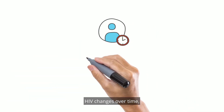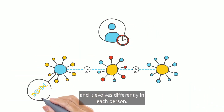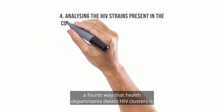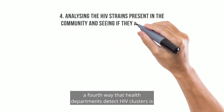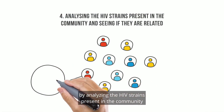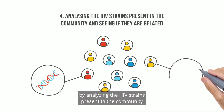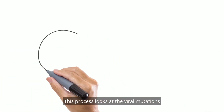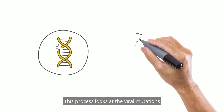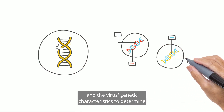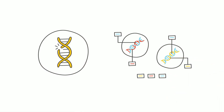HIV changes over time and it evolves differently in each person. Because of that, a fourth way that health departments detect HIV clusters is by analyzing the HIV strains present in the community and seeing if they are related. This process looks at the viral mutations and the virus's genetic characteristics to determine how closely the strains are related.